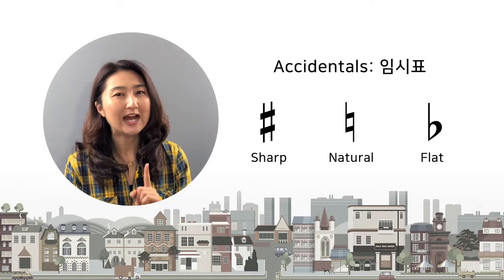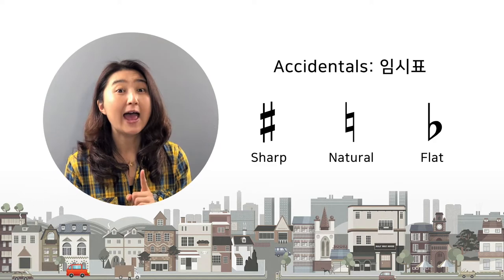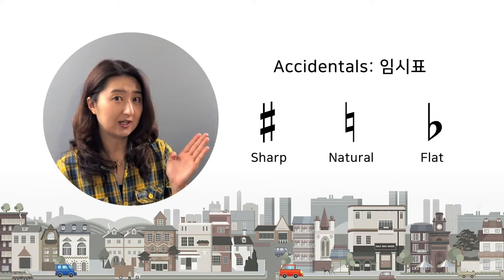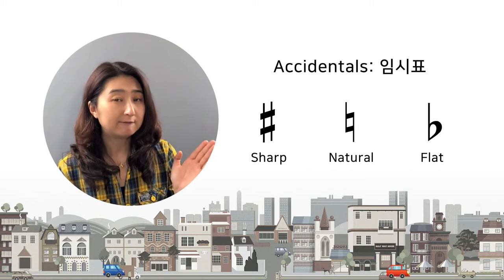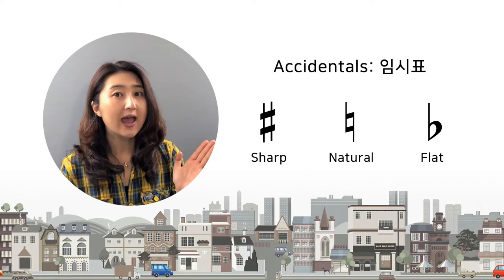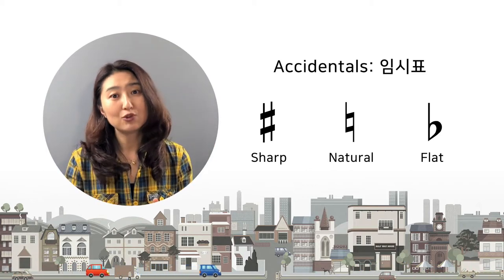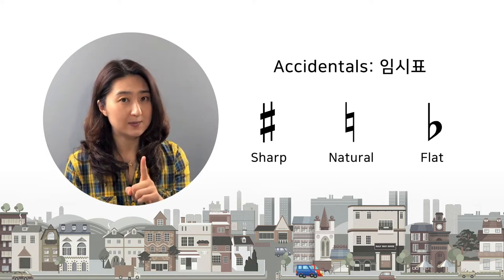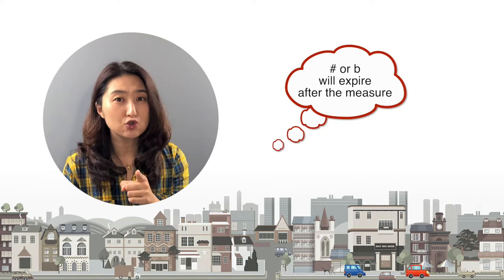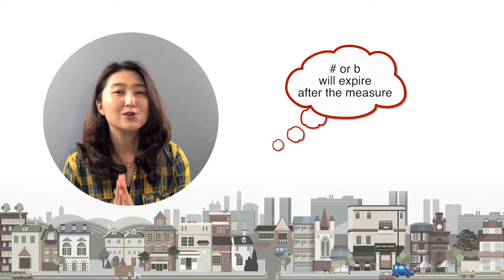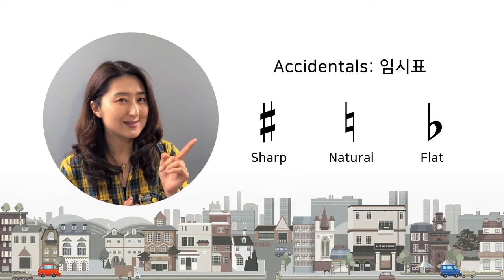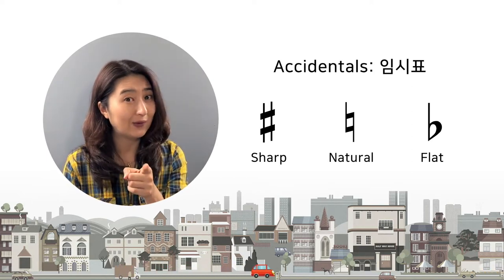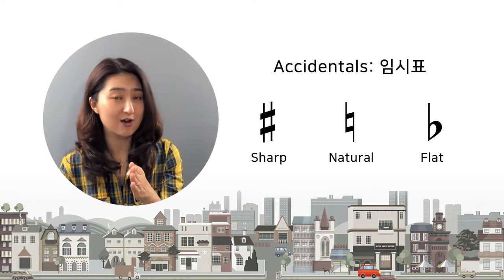Today we're going to learn sharps, flats, and natural signs, which we call accidentals. Sharps, flats, and naturals can happen anytime during the song. They only affect a note one time and are only good for one measure. That's why we call them accidentals — it means they accidentally happen on that note, not throughout the entire song.